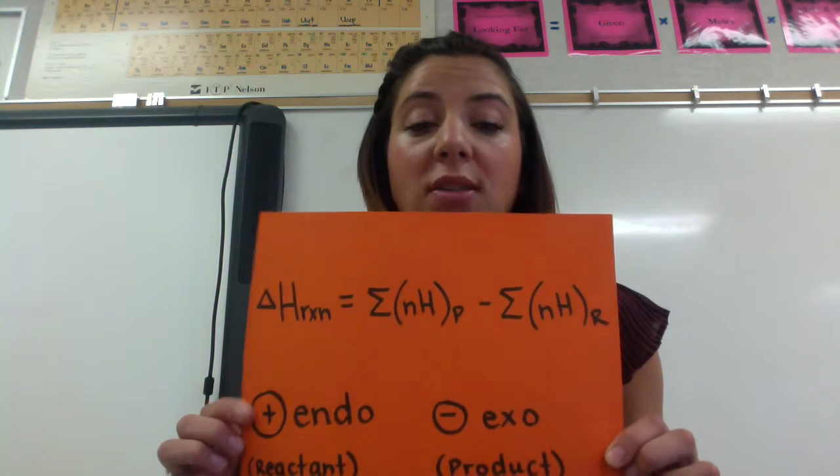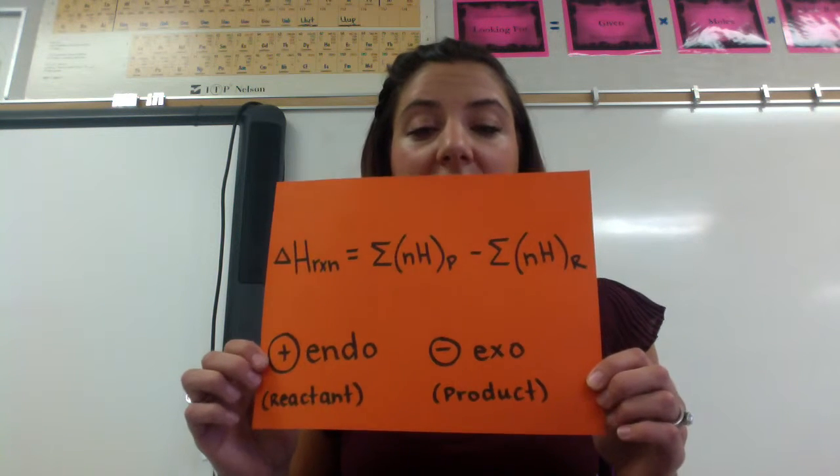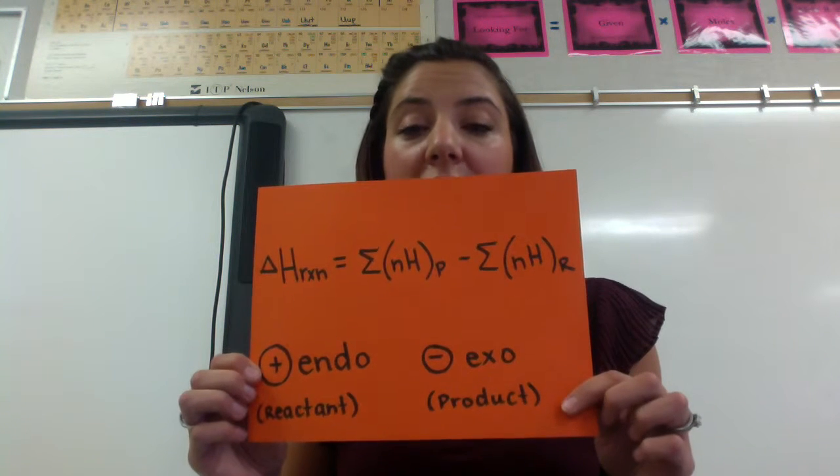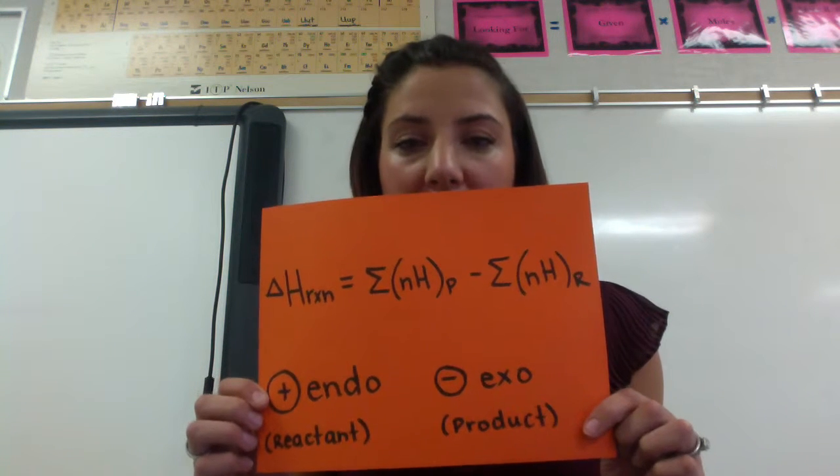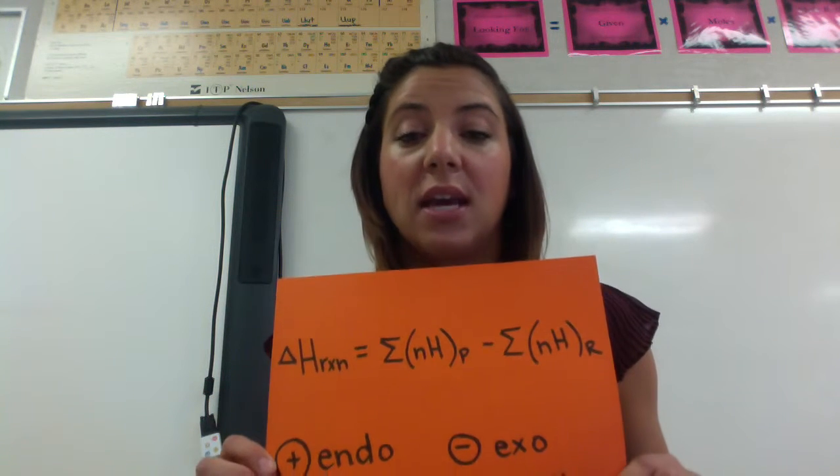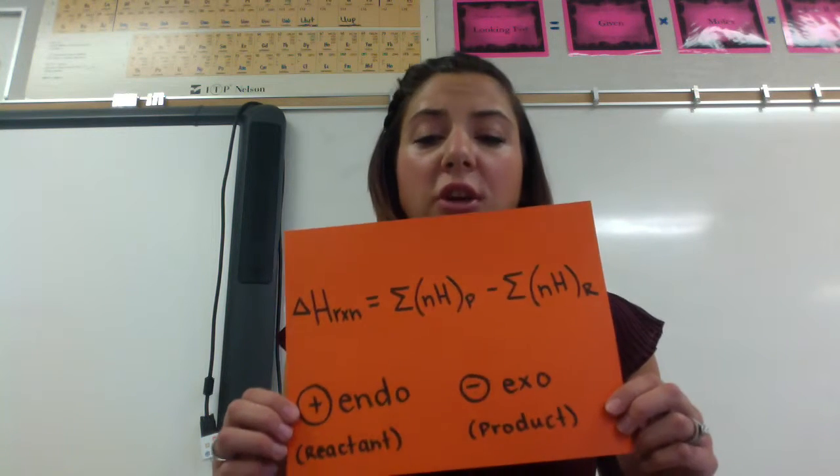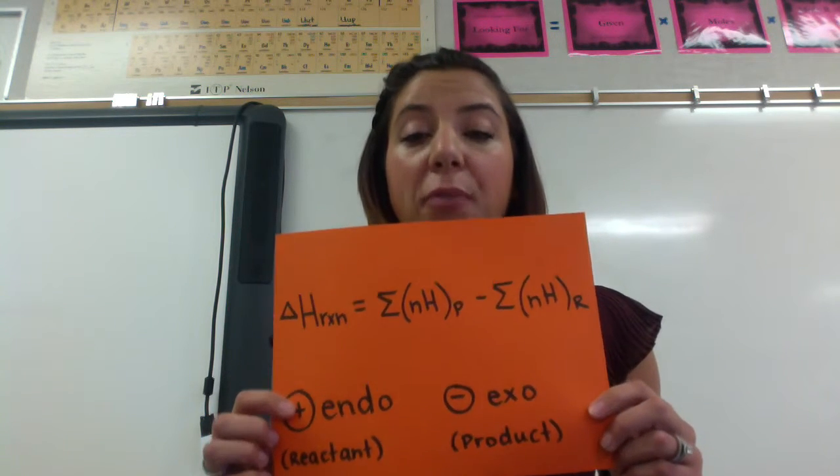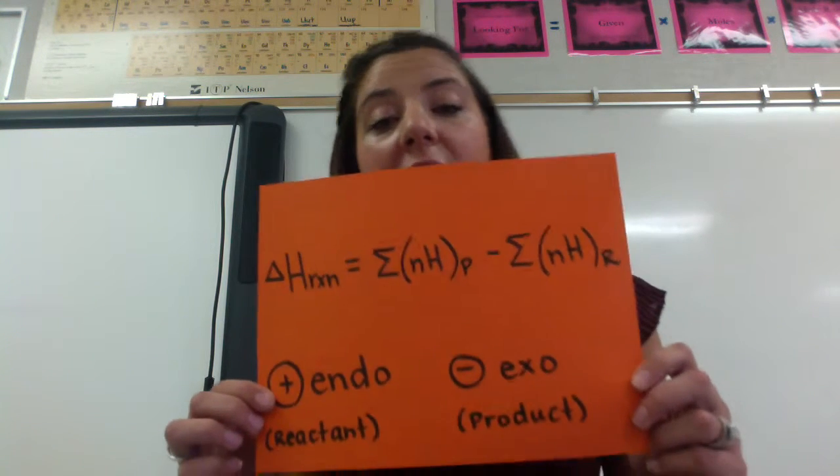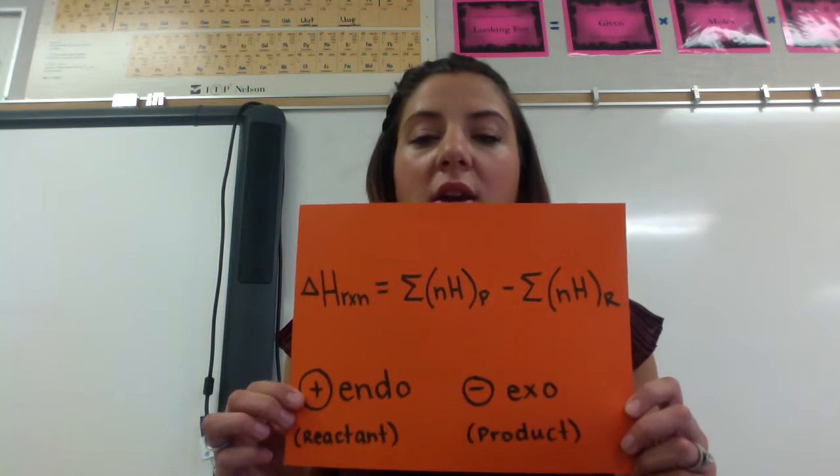If it ends up being a positive number, it's an endothermic reaction, which means the energy becomes a reactant. If it's negative, it's going to be an exothermic reaction and the reaction enthalpy is going to be a product when you put it back in that equation. When you put it back in the equation, it becomes an absolute number, so it becomes a positive no matter what, and you determine whether it's positive or negative dependent on what side of the equation it's actually on. Reaction enthalpy is super important and it's always your first step if you have a chemical reaction, so definitely know this formula.